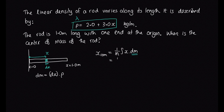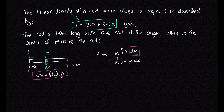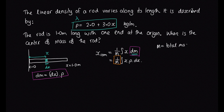We can substitute this in: we've got 1 over M times the integral of x times ρ dx. We also need to find what 1 over M is. The total mass M is a little complicated to calculate because the mass is varying along the length.